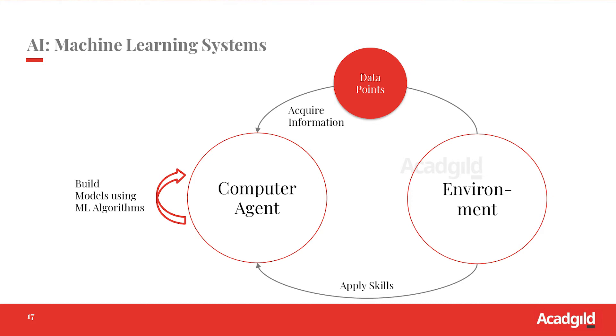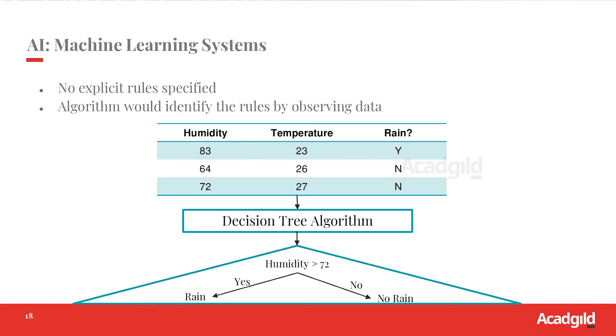For example, the rain prediction case - now we look at a machine learning perspective. Now we have three data samples: humidity, temperature, and whether it is going to rain or not. These three data points we give to a machine learning algorithm instead of a human expert.